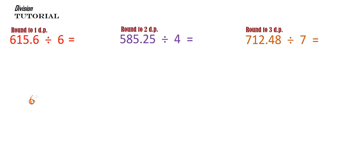Let's set this out in a way that we can actually solve the equation. Okay, so 615.6 divided by 6. What I like to do sometimes is just put in a couple of extra zeros just in case I might need them. Okay, let's start.